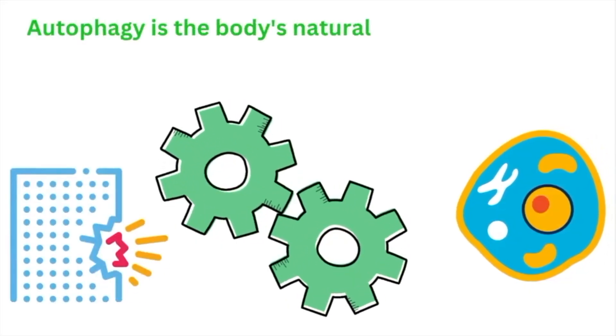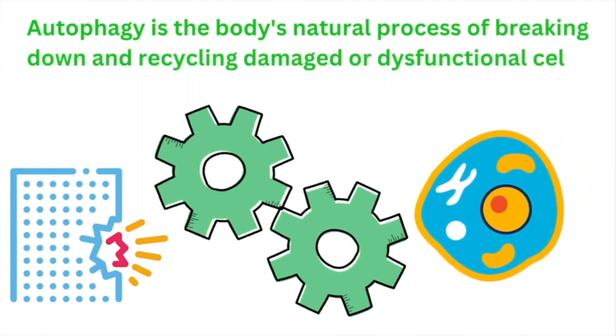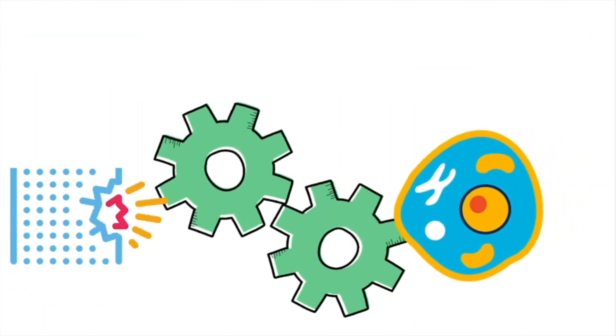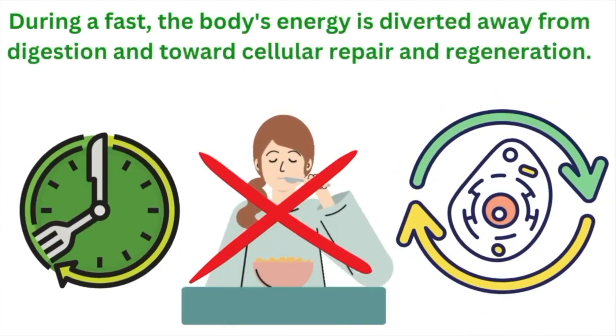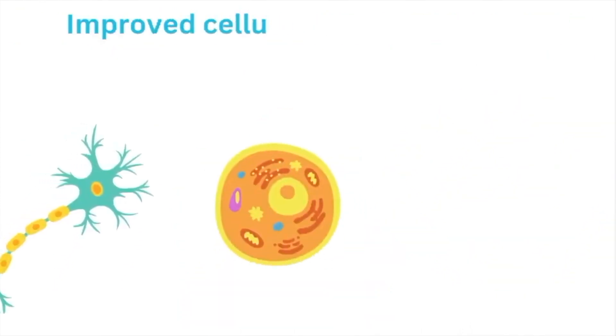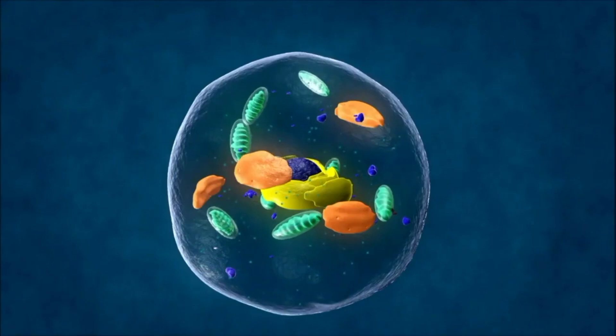which is the brain's natural process of breaking down and recycling damaged or dysfunctional cells. During a fast, the body's energy is diverted away from digestion and towards cellular repair and regeneration. This triggers a process of autophagy, in which damaged or dysfunctional cells are broken down and recycled, leading to improved cellular health and function.